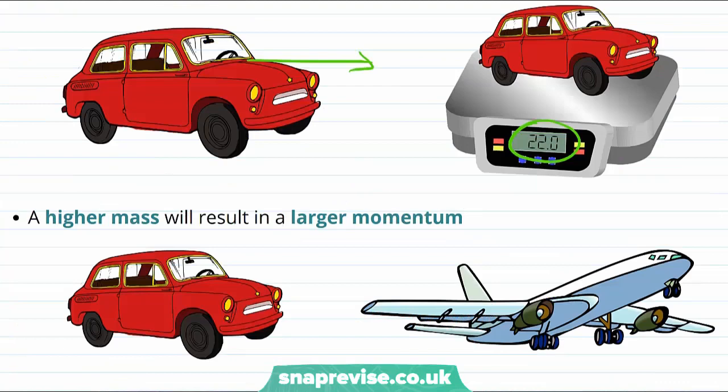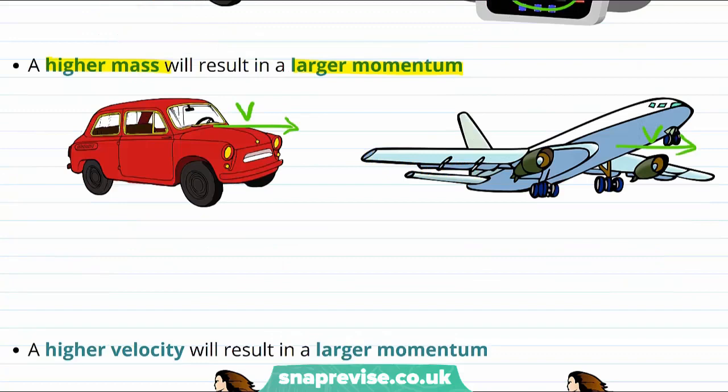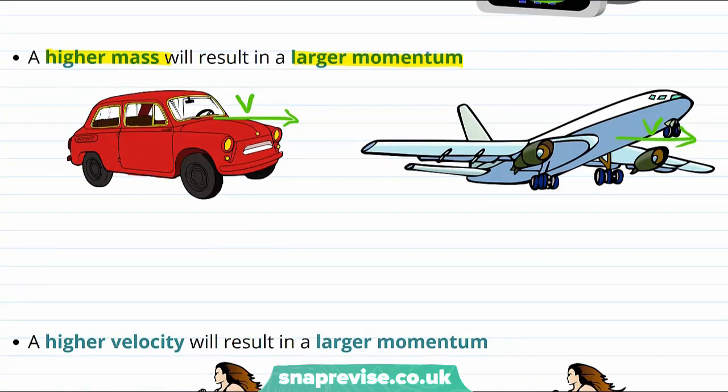With regards to the dependence on mass, an object with a higher mass will have a larger momentum. For example, if a car and an aeroplane were both to travel at the same speed, then the aeroplane would have more momentum. And a mathematical way to write down this relationship would be to say that the momentum is proportional to the mass.